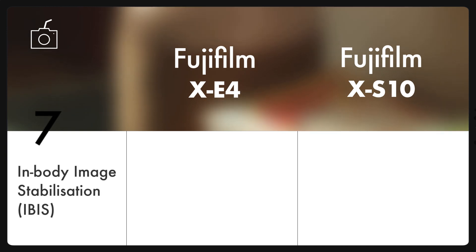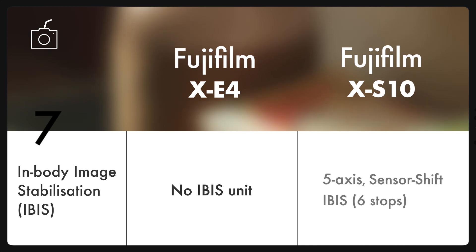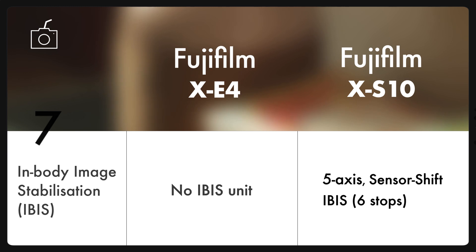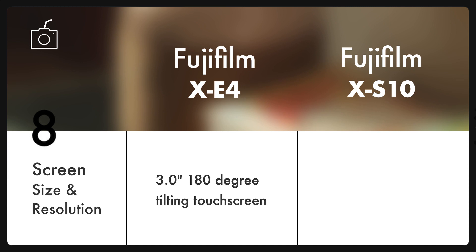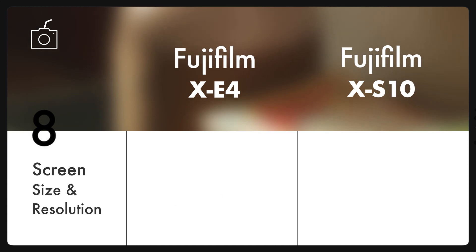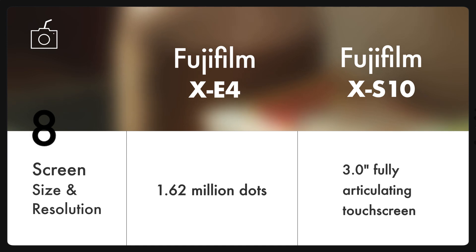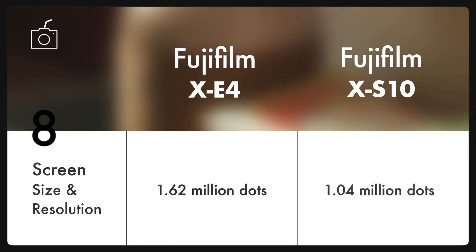One of the biggest differences between both cameras is stabilization. The XE4 has no stabilization, while the XS10 has 5-axis in-body image stabilization with a sensor shift mechanism. Both cameras also have different screens: the XE4 has a 3-inch 180-degree tilting touchscreen with 1.62 million dots, whereas the XS10 has a 3-inch fully articulated touchscreen with 1.04 million dots.